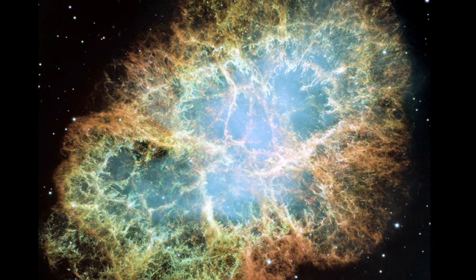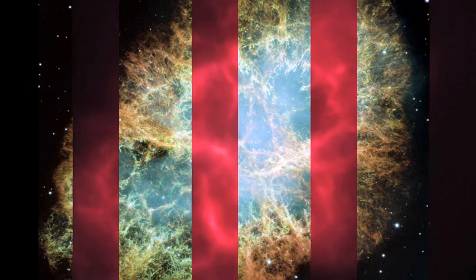Images of the infrared radiation emitted by M1 reveal filament structures that run through this nebula. These are thought to contain hot gases, but their exact nature still remains a mystery. The infrared also shows a cloud of energetic electrons trapped in a magnetic field and emitting synchrotron radiation.